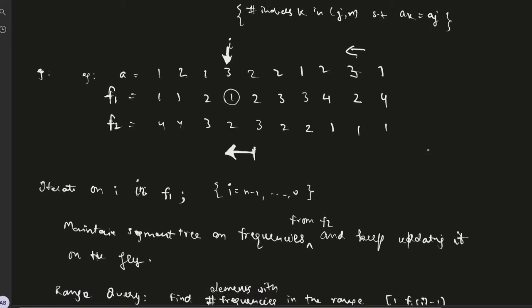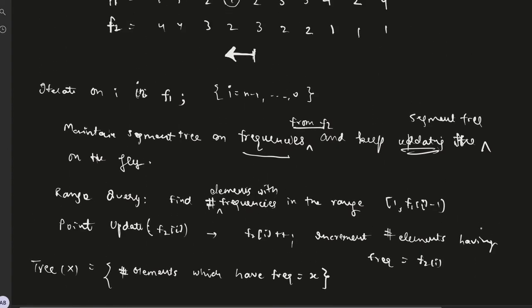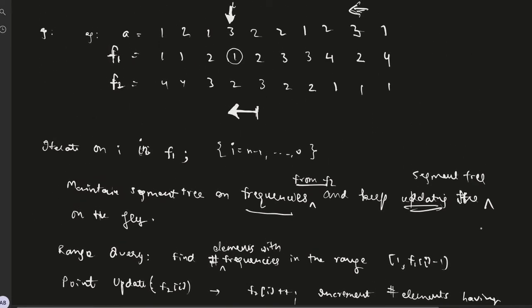We'll simultaneously maintain a segment tree which is based on the frequencies from f2, and as we keep traversing f1 in the reverse direction from right to left, we'll also keep updating the segment tree on the fly. The query we would have to answer is a range query.